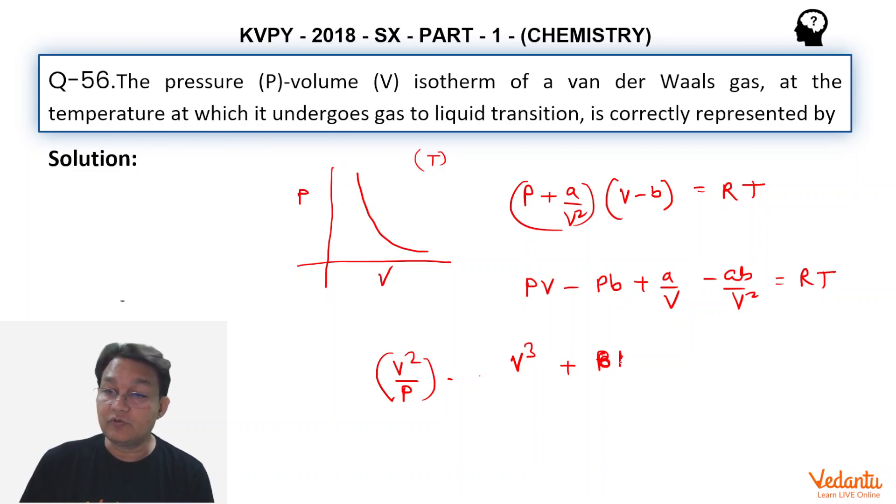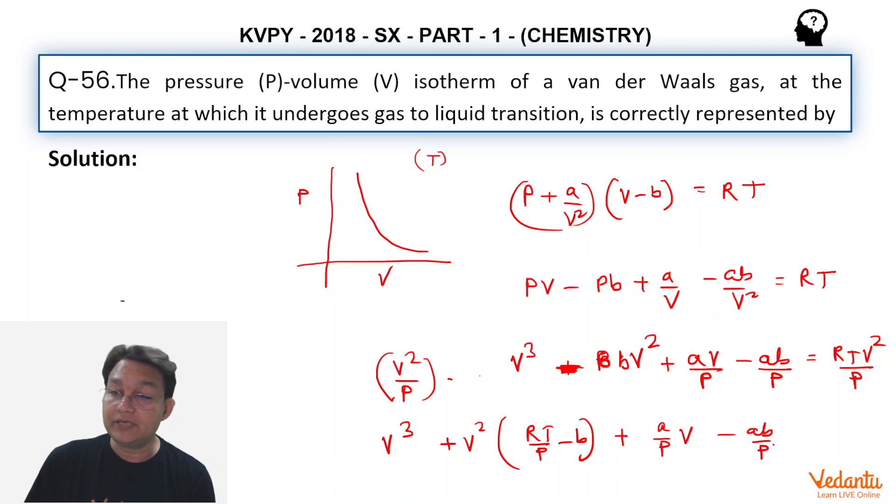...plus, P is cancelled because we multiply by V² and divide by P. So that is -BV² + AV/P - AB/P = RTV²/P. And if we collect all these terms we get V³ + V² and RT/P - B plus V term if we collect so A/P - AB/P = 0.